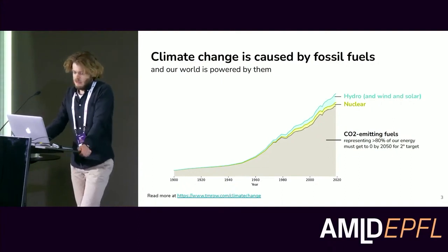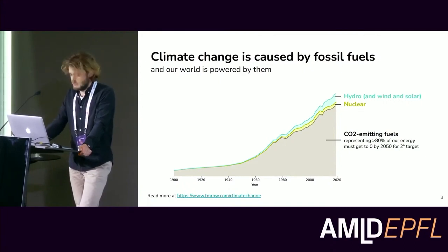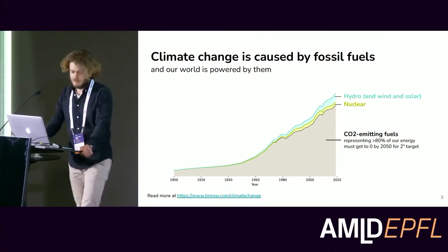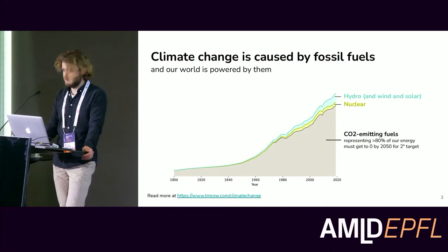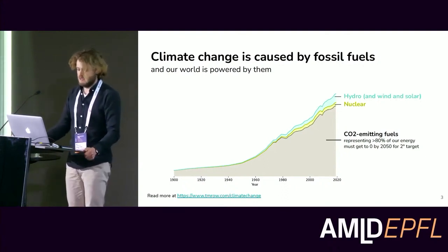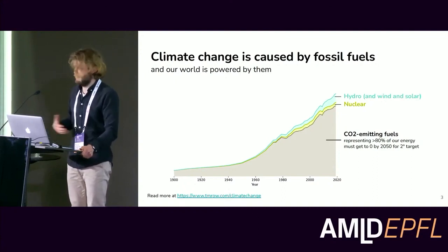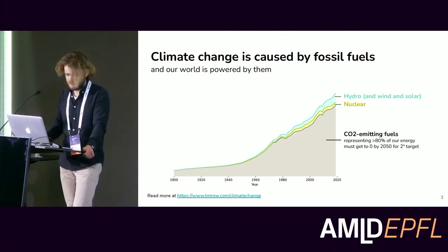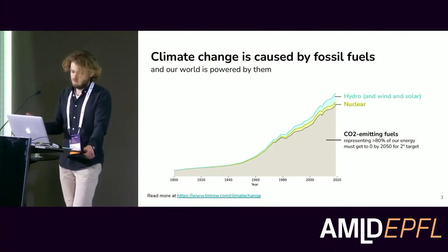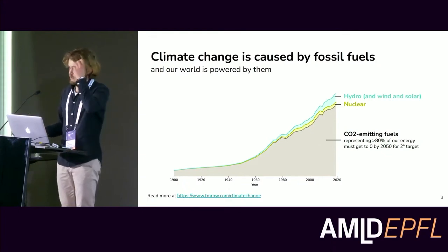If we want to stop climate change we know that we have to stop burning fossil fuels, and it's not easy — as you can see on this chart, currently about 80 percent of our entire energy supply comes from burning fossil fuels. Energy is fundamental to the way we grow food, heat our homes, and generate the goods and services we consume every day. So getting rid of all these fossil fuels means we have to reinvent 80 percent of the way we live our lives.